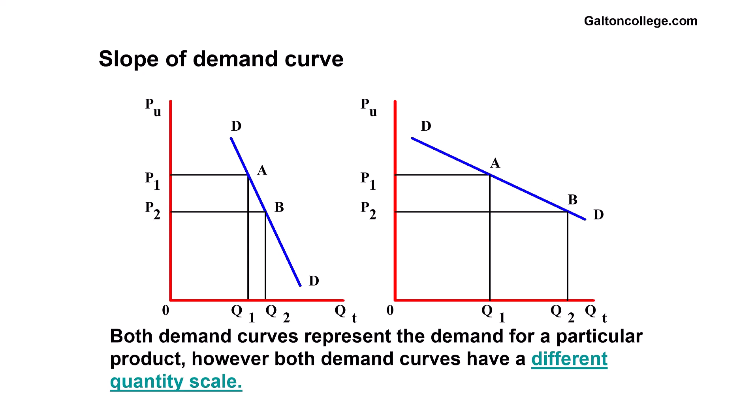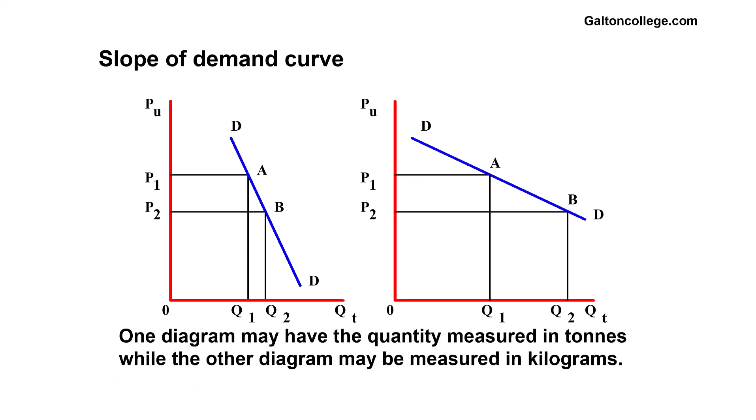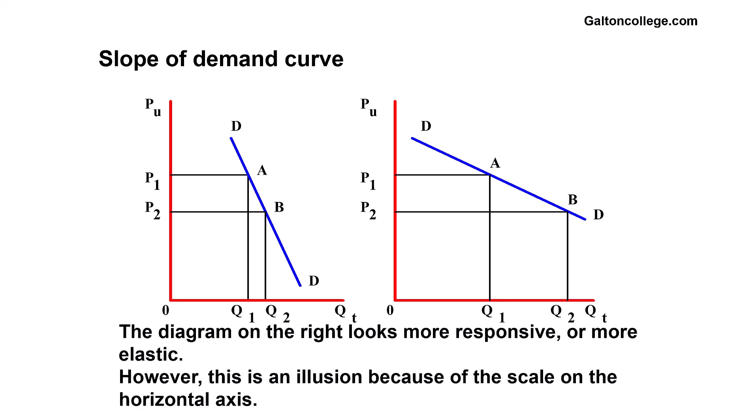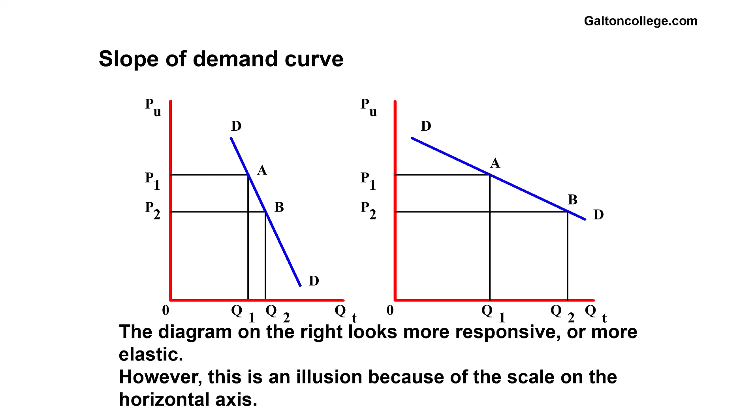One may have, for example, the axis measured in tons and the other one may be measured in kilograms. It's the same item, just different ways of measuring it. So, we get two, what looks like different demand curves. But we can't go on and say that the one on the right is more elastic than the one on the left, more responsive to price changes than the one on the left, which seems to be less responsive to price changes. The illusion is caused by the horizontal axis, by the scale on the horizontal axis.